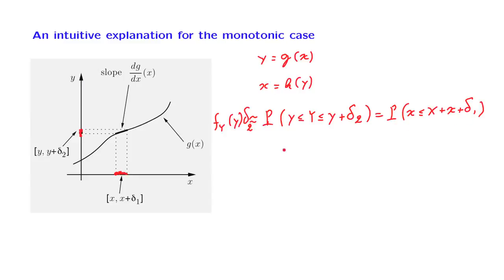Similarly, on the other side, the probability that x falls on that interval is the PDF of x times the length of that interval. So this gives us already a relation between the PDF of y and the PDF of x. But it involves those two numbers delta_1 and delta_2. So how are these two numbers related?